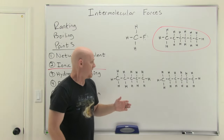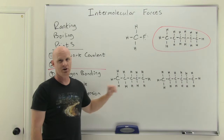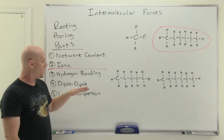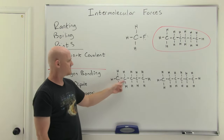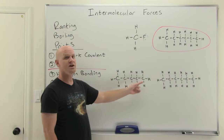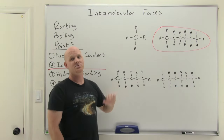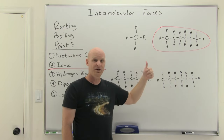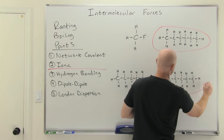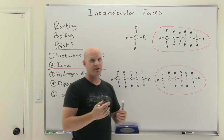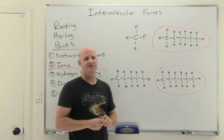These last two molecules are both hydrocarbons — both non-polar — so the only intermolecular force is London dispersion forces. The one on the left is a five-carbon chain, and the one on the right is a six-carbon chain. As a result, the one on the right has bigger size and bigger surface area, and therefore greater London dispersion forces, greater overall intermolecular forces, and a higher boiling point.